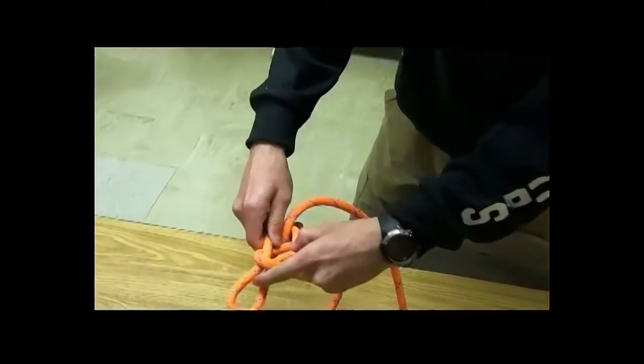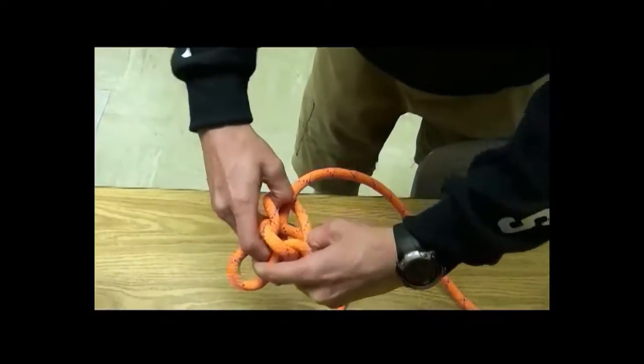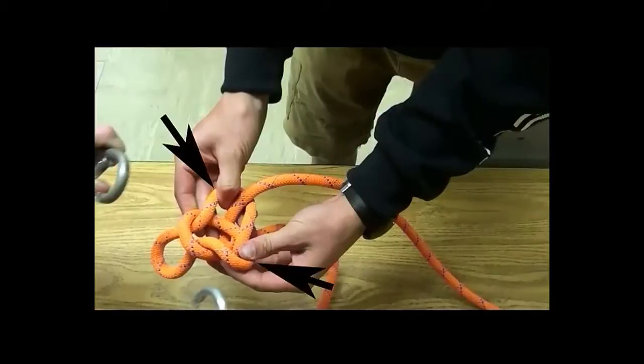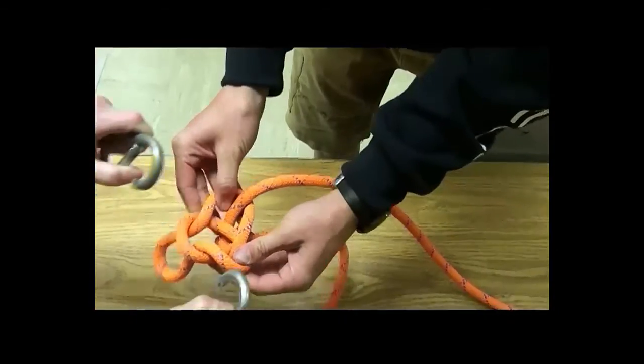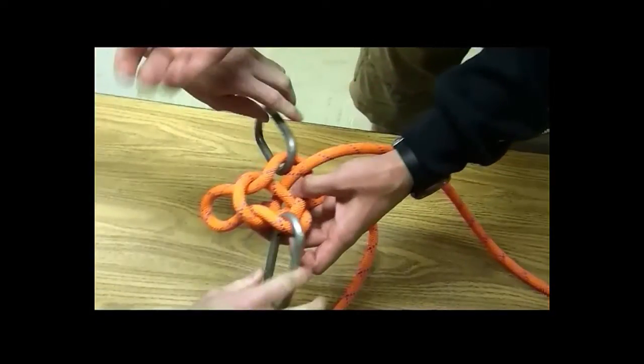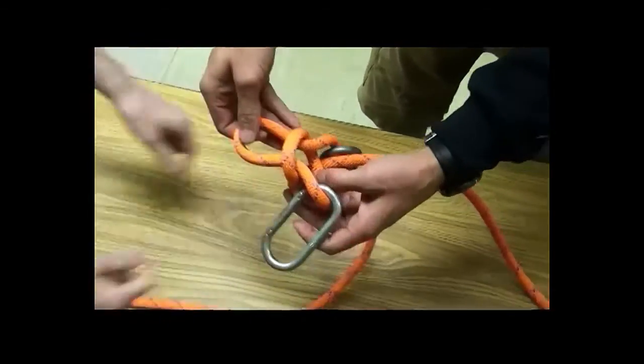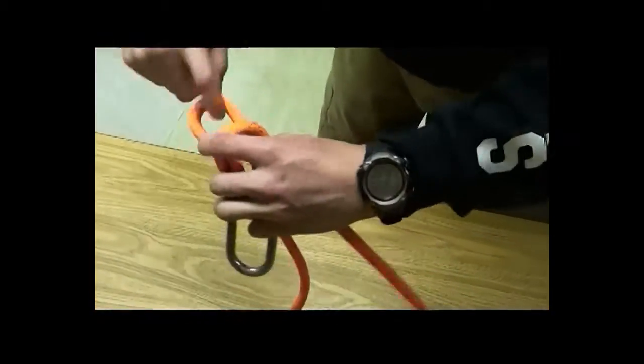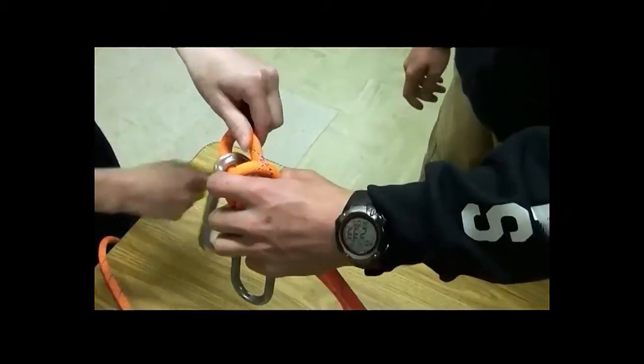And then to get to clip in, you pull what is making the loop for your knot. Then you'll go around the tree and clip in right there. And done.